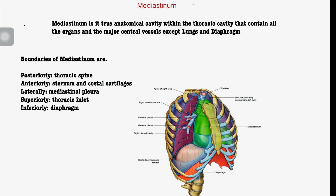We hope you will find this helpful. We will start with the mediastinum, because if something happens to the heart, where is the heart located? Everyone knows that the heart is in the thorax, but exactly where in the thorax? We will start with location, then cover structure, function, physiology, pathology, and other topics.